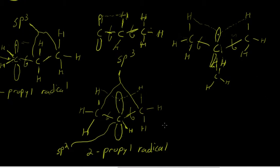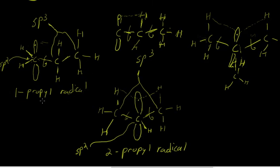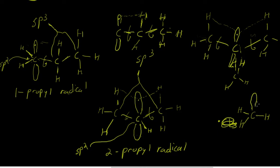The secondary radical is the second most stable, and the primary radical is the least stable. When you have the methyl radical — just CH3 with this carbon bearing an unpaired electron — there is no adjacent carbon atom to bear some of this charge. This carbon is sp2 hybridized with an unhybridized P orbital, and there is no adjacent carbon atom over which this unpaired electron can delocalize. So the methyl radical is the least stable.